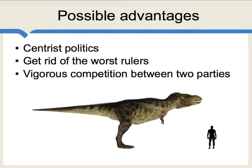What are some possible advantages of having something that operates like the median voter model? For one thing, you get centrist politics — though people who are not at the center don't think that's an advantage. Perhaps most importantly, you manage to get rid of the very worst rulers: if there's a truly terrible leader, that person can and probably will be voted out of office. And more generally, you have vigorous competition between the two parties, so they monitor and hold each other accountable, and they uncover information when the other party does something wrong.